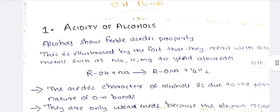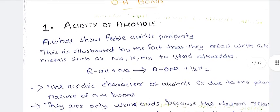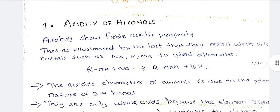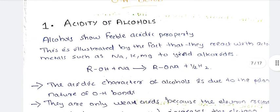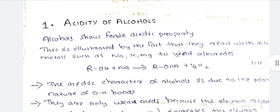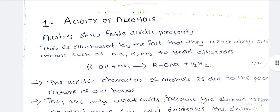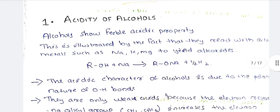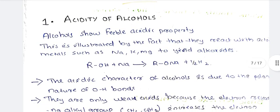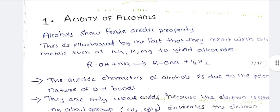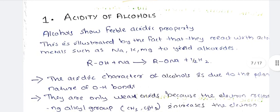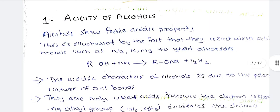In our video, we are going to talk about organic chemistry at Caligate University in the 5th semester. We have already uploaded the 6th part; this is the 7th part of the video. Today, we are going to talk about basicity of aromatic amino acids and acidity of phenols.